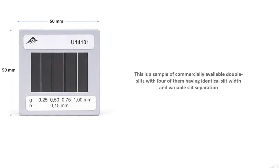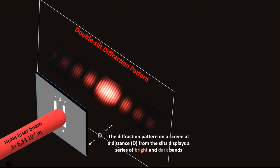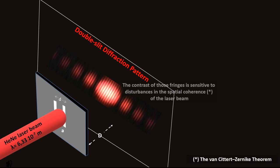This is a sample of commercially available double-slits, with four of them having identical slit width and variable slit separation. The experiment involves a red laser beam diffracted through a double slit. The diffraction pattern on a screen at a distance d from the slits displays a series of bright and dark bands. The bright bands contain fringes, and the contrast of those fringes is sensitive to disturbances in the spatial coherence of the laser beam.